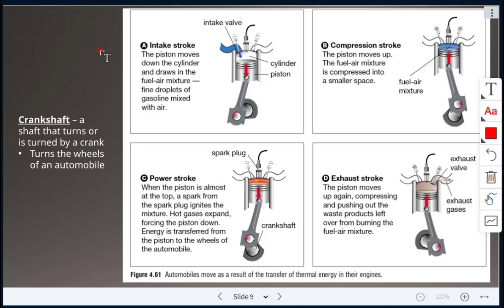I do have a video showing this. The first step, step A, is the intake stroke. The piston moves down the cylinder and draws in a fuel-air mixture, which is droplets of gas mixed with air. Next is a compression stroke. The piston moves up and that fuel-air mixture now is compressed into a small space. Next is the power stroke. Here we have a spark plug. When the piston is almost at the top, a spark from the spark plug will ignite the mixture. Hot gases will then expand and force that piston down. Energy will then get transferred from the piston to the wheels of the automobile.